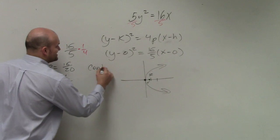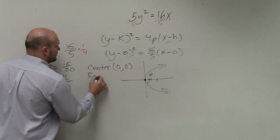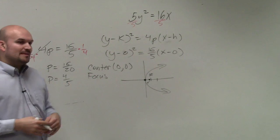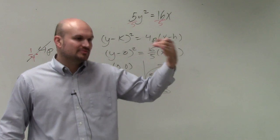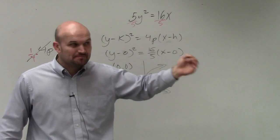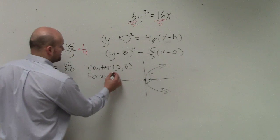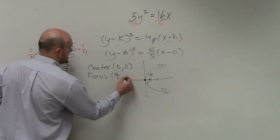So we have the center is 0, 0. The focus, remember, is the value of p. Now, we're moving to the right, so I'm going to be adding p to my x-coordinate. Well, since my x-coordinate is 0, that makes it pretty simple. So that's 4 fifths comma 0.